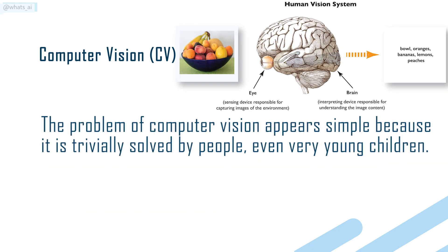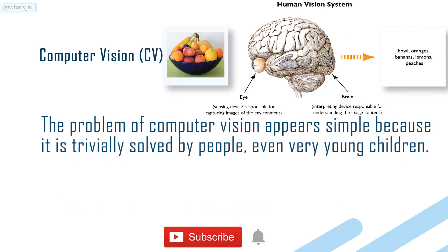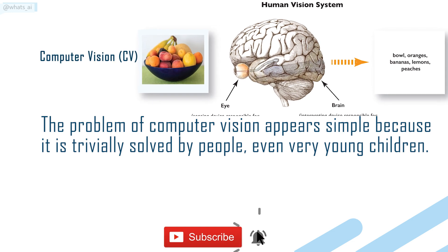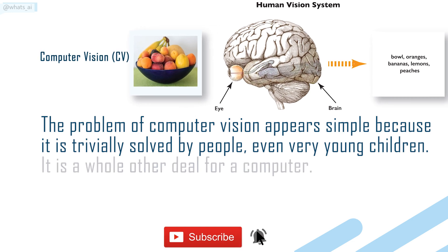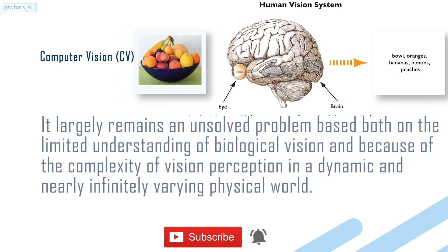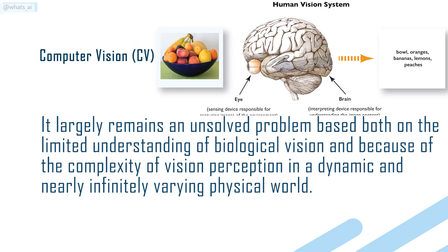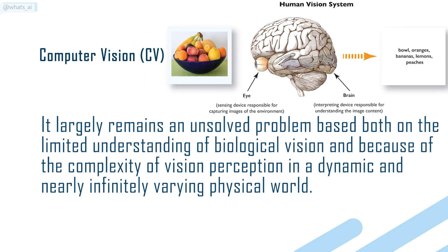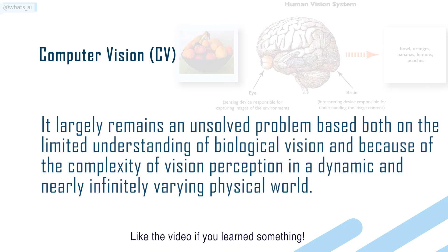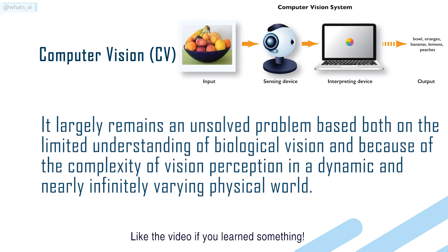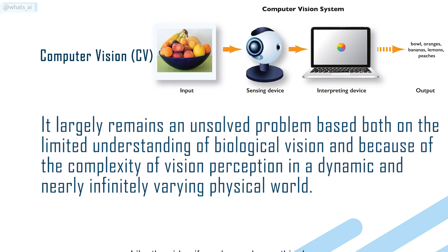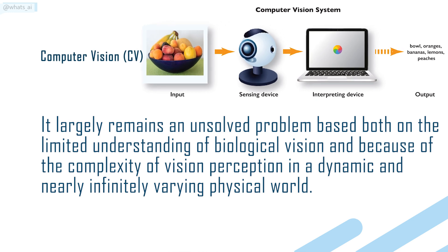The problem of computer vision appears simple because it is trivially solved by people, even very young children. It is a whole other deal for a computer. It largely remains an unsolved problem based both on the limited understanding of biological vision and because of the complexity of vision perception in a dynamic and nearly infinitely varying physical world.